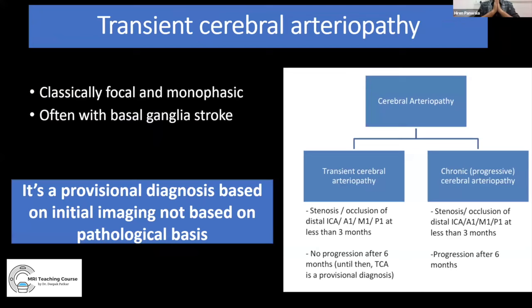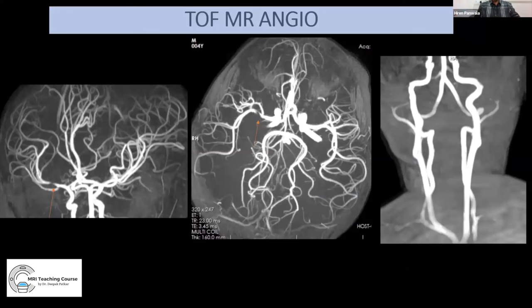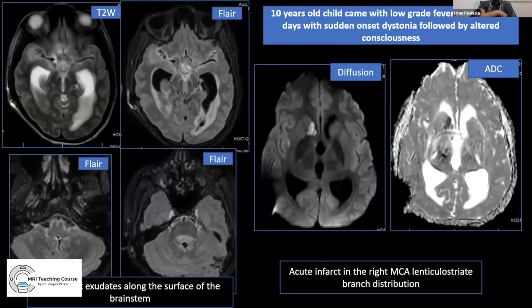Transient cerebral arteriopathy (TCA) should be differentiated from chronic cerebral arteriopathy. TCA will show no progression on six-month follow-up, while progression of narrowing on MR angiogram indicates chronic cerebral arteriopathy. TCA is typically focal and monophasic, often presenting in the basal ganglia territory. Vessel wall imaging in another TCA case showed focal circumferential enhancement in the distal MCA — positive vessel wall imaging — and the patient tested positive for varicella infection on investigation.